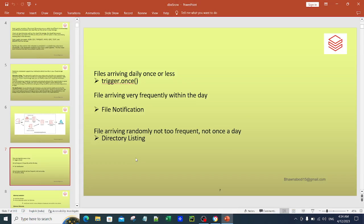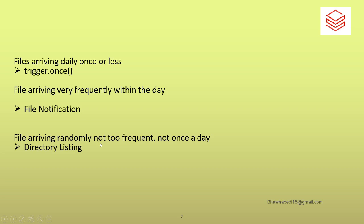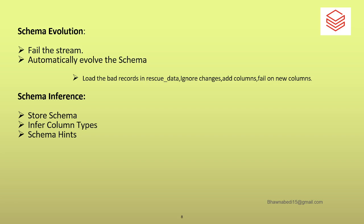Directory listing is the default mode. Whenever you enable Cloud Files without enabling trigger-once or file notification, it automatically defaults to directory listing. As a guideline: if your file arrives daily once or twice and you are okay with some delay, use trigger-once. If files arrive very frequently within a day, it is better to use file notification. If files arrive but not too frequently with small files, you can use directory listing.